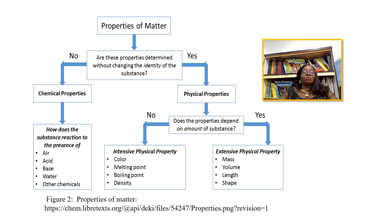Under the physical properties, we ask ourselves again: does the property depend on the amount of substance? If the property depends on the amount of substance, we form what we call extensive physical properties — that is, a physical property that will change if the amount of matter changes. The mass will change, the volume will change, the length will change, and the shape will change if the amount of matter changes. Then the physical property that will not change depending on the amount of substance is what we call the intensive physical property.